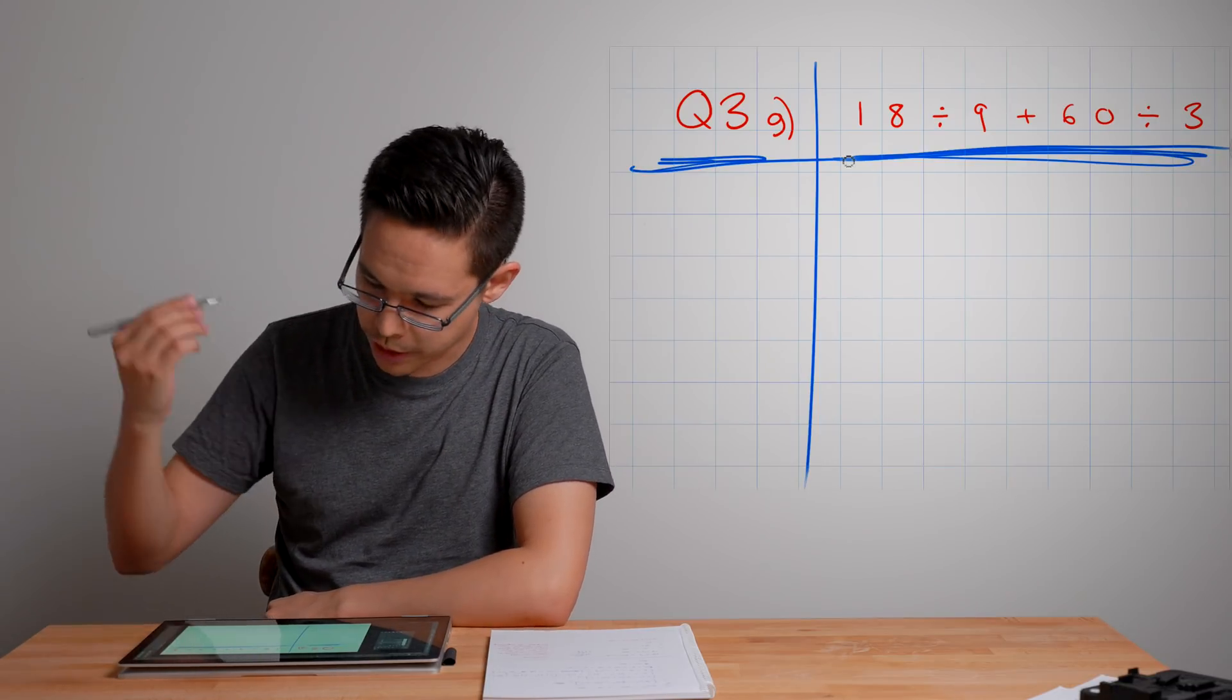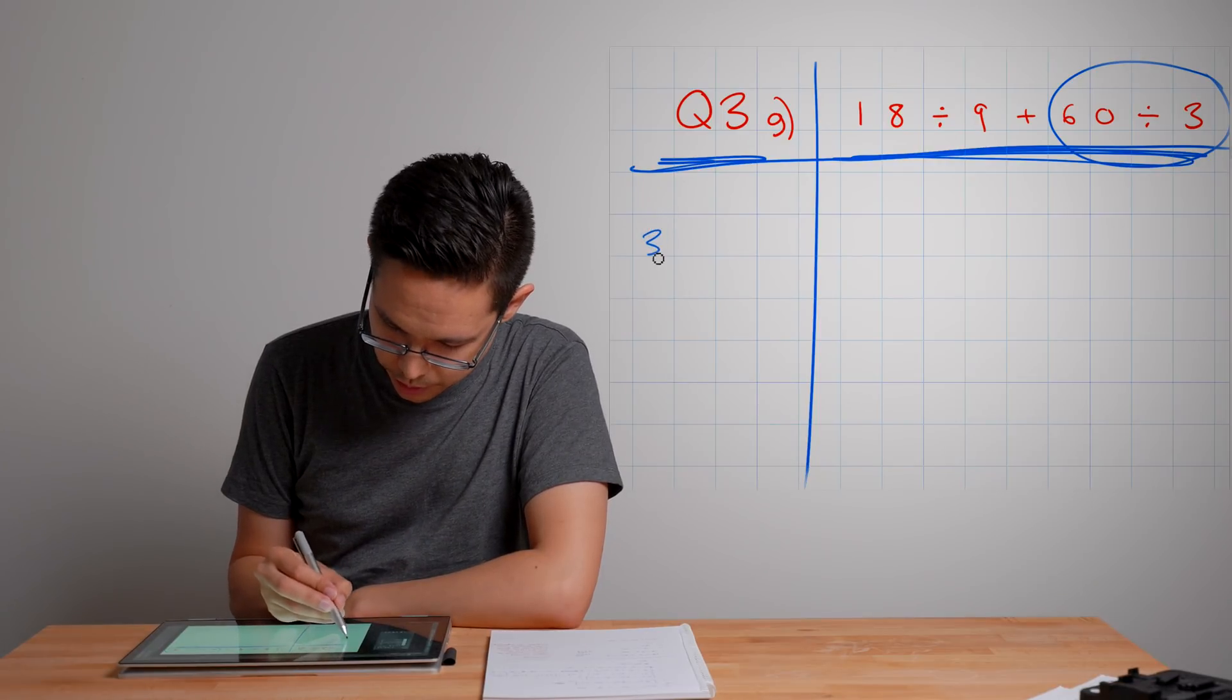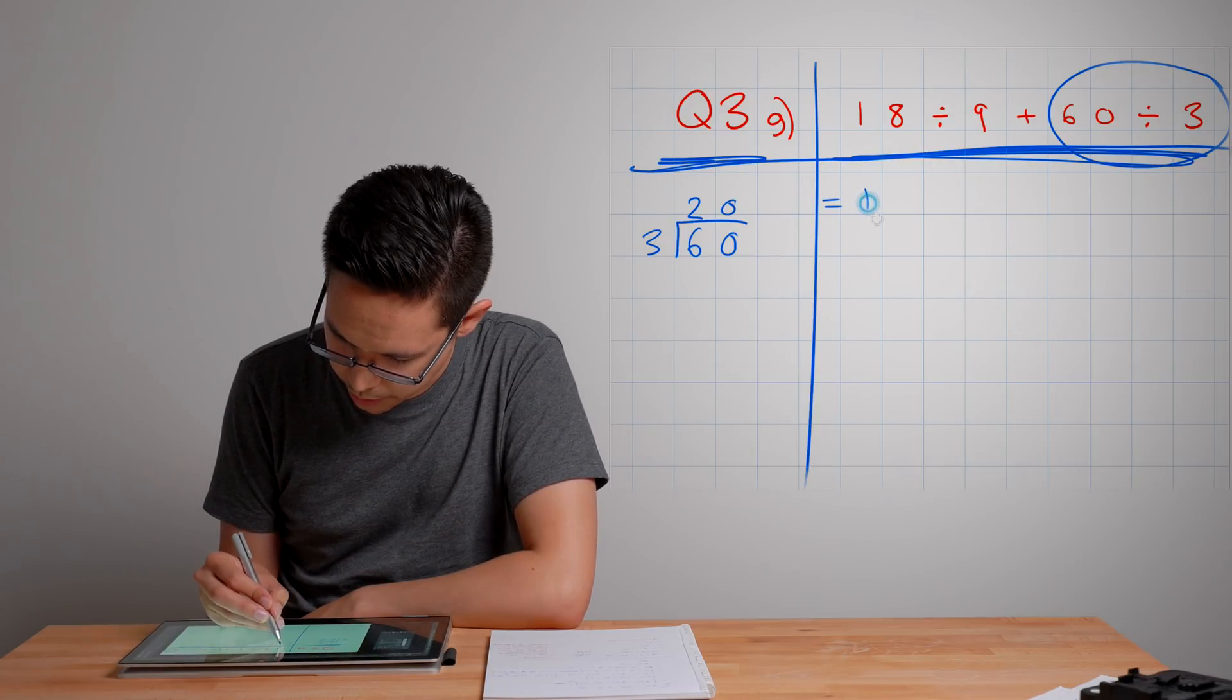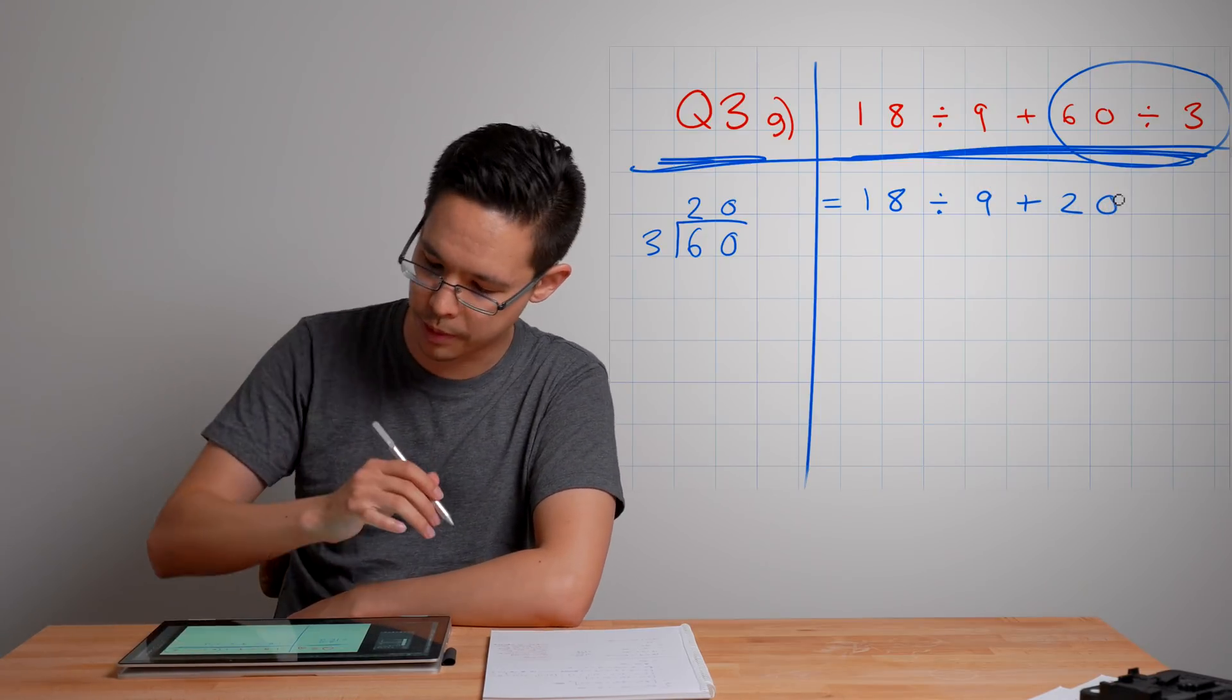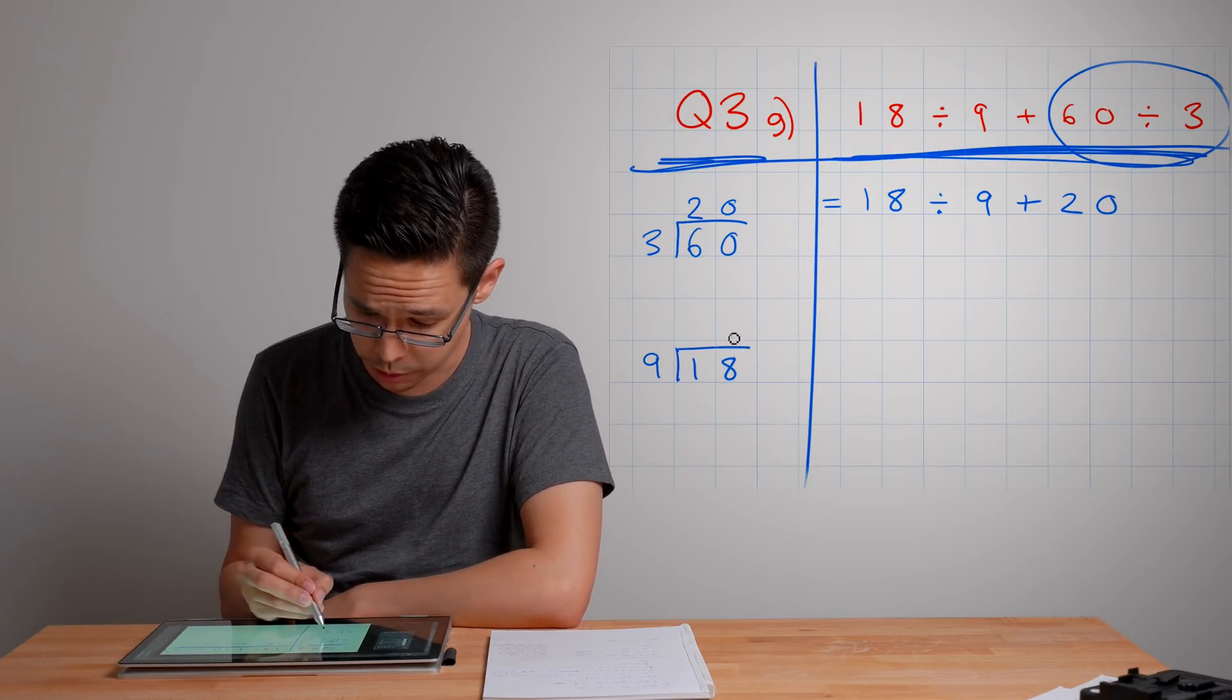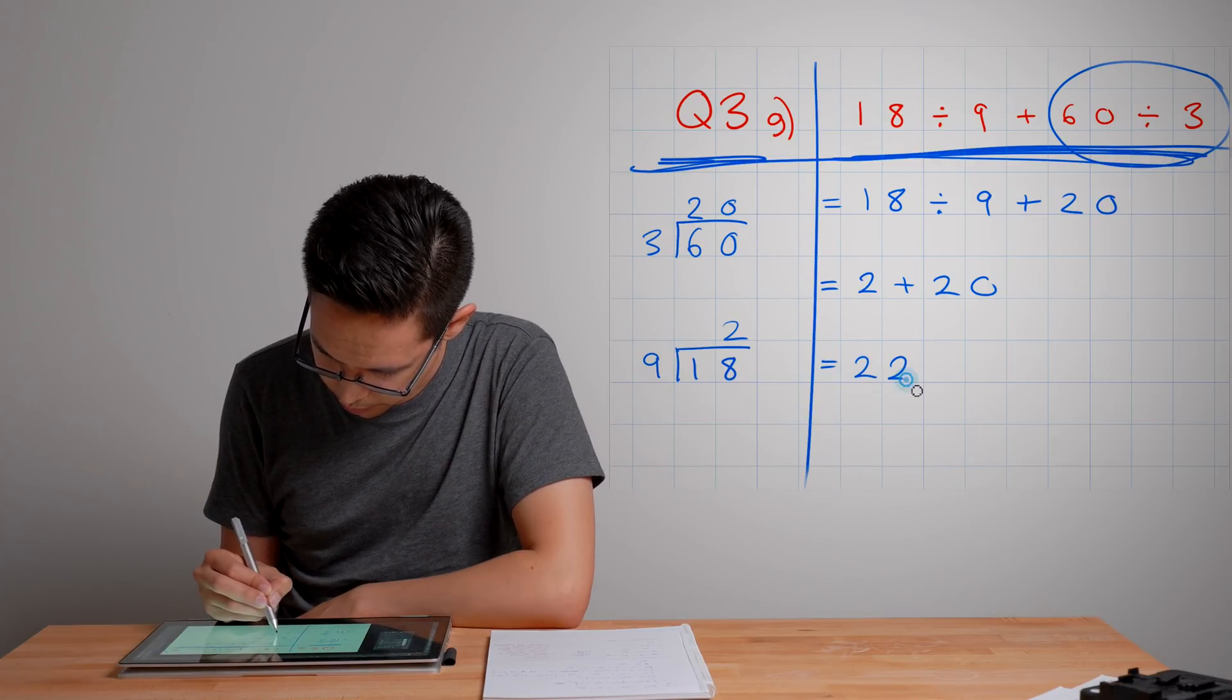I'm going to use the BOMDAS rule which means I have to do division first. I'm going to tackle this bit of the problem here first. 60 divided by 3—how many times does 3 fit into 60? Well, 3 fits into 6 twice, 3 fits into 0 zero times, so the answer is 20. So this new line is 18 divided by 9 plus 20. I do the BOMDAS rule again, that means I have to do 18 divided by 9. If you know your 9 times tables, that answer is going to be 2. So now the problem becomes 2 plus 20, and then I can just simplify that down to the answer of 22.